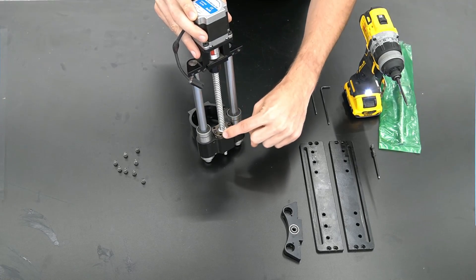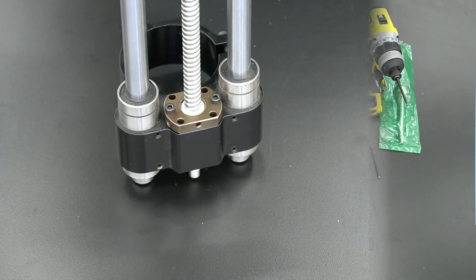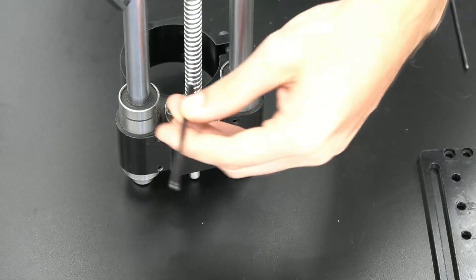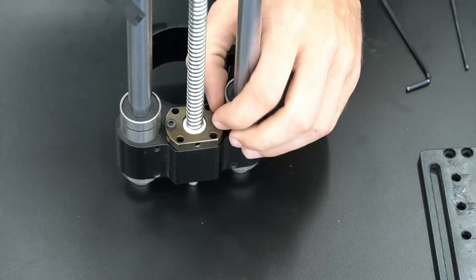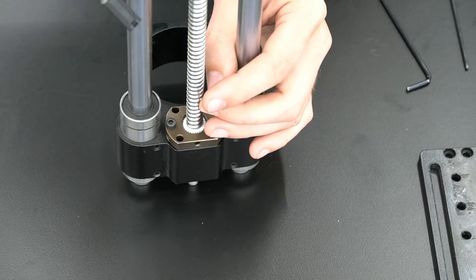Our next step is going to be to loosen the two bolts on the top of the ball nut. By loosening these two bolts, we will release the spindle mount from the ball nut, allowing it to be removed from the Z slider.